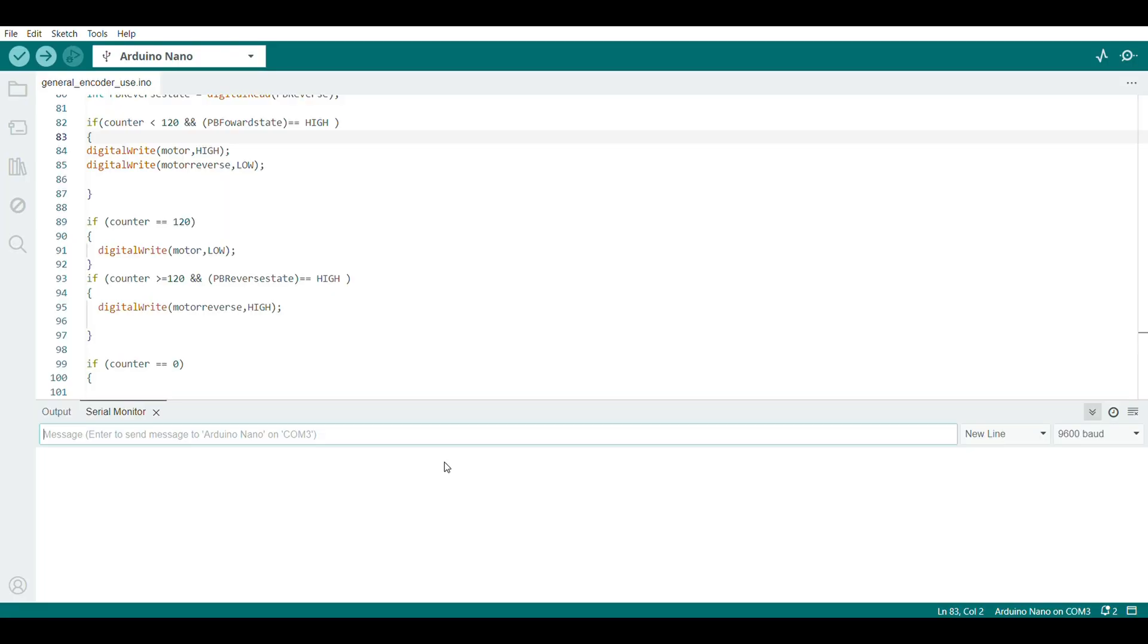Here you can see the encoder counting all the way to 120. It stops spinning clockwise at this point, stops at 120. And then if you trigger the other push button, it'll go counterclockwise and count back all the way down to zero. You can change these as you need depending on what your project needs are.